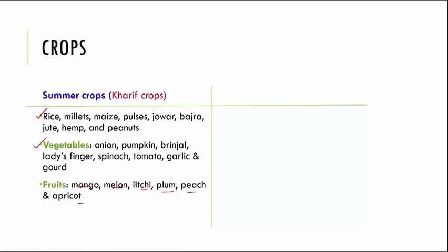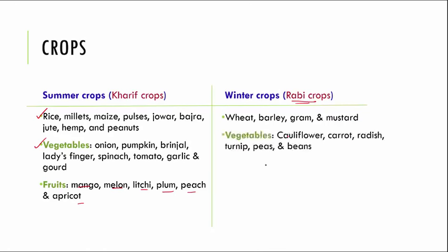The other season is winter crops or Rabi crops. Common examples are wheat, barley, gram and mustard. Winter vegetables are cauliflower, carrots, radish, turnips, peas and beans — you get a very good yield of these in winter. Rabi fruits include apples, bananas, pomegranates and berries, which are commonly found in winter.